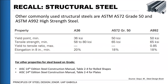We also discussed the properties of the most common structural steels. For A36, Fy = 36 ksi and Fu = 58 ksi, which in metric is approximately 248 MPa and 400 MPa respectively. For A572 Grade 50 and A992, Fy = 50 ksi and Fu = 65 ksi, which corresponds to approximately 345 MPa and 450 MPa. A992 shares the same values.